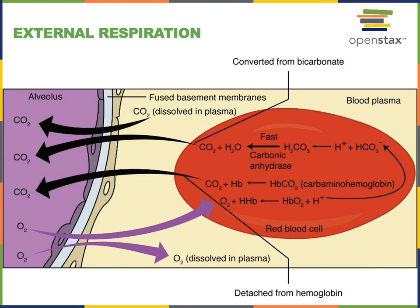Oxygen moves from an alveolus into the blood plasma, and then from the blood plasma into the red blood cell, where oxygen binds to hemoglobin to help transport oxygen in the blood. Carbon dioxide, found inside the red blood cell and dissolved in the plasma, moves in the other direction — across the capillary wall from the blood toward the alveolus. Carbon dioxide moves out of the blood into the lungs, while oxygen moves from the lungs into the blood, during external respiration.